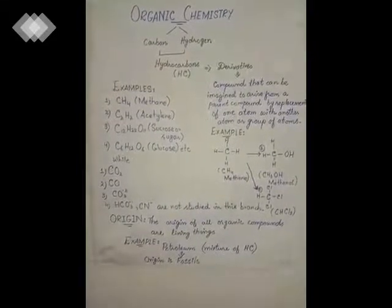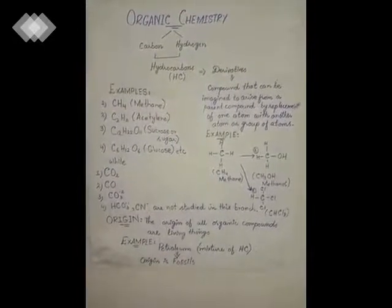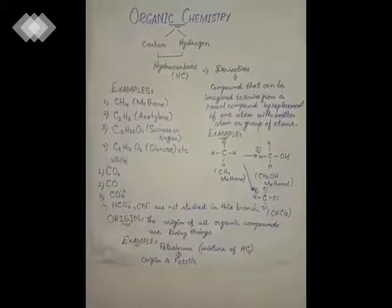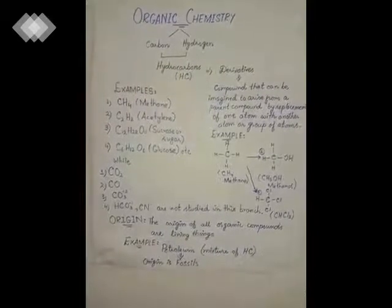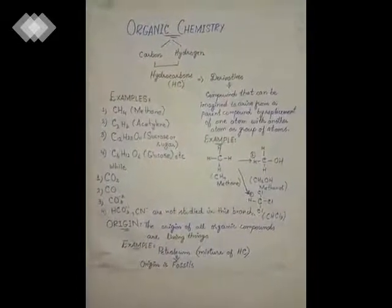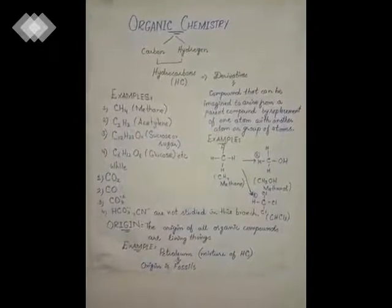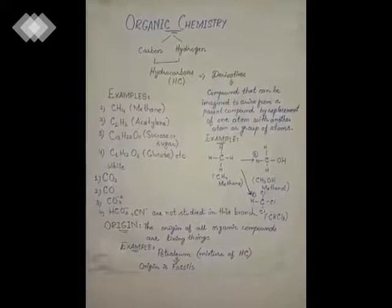At the last, regarding the origin of organic compounds: all organic compounds are derived from living things — their source is living things. For example, petroleum is a mixture of hydrocarbons and it originates from fossils, meaning from the dead remains of plants and animals. This is all about organic chemistry.